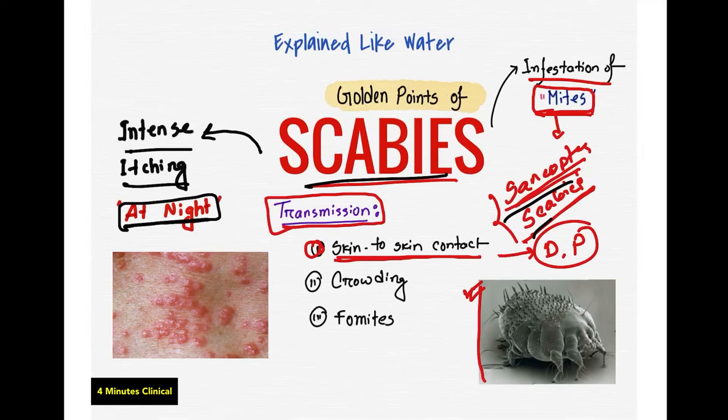The second factor is crowding, especially when it is a small group or household. Low income and poor living conditions are also contributing factors, which is why this leads to cases of scabies infestation.